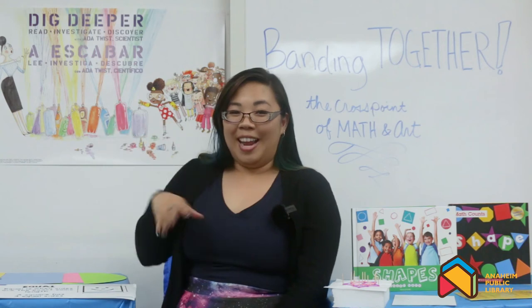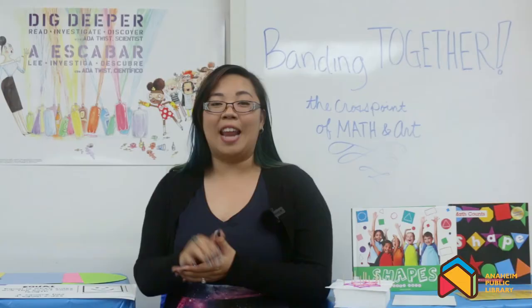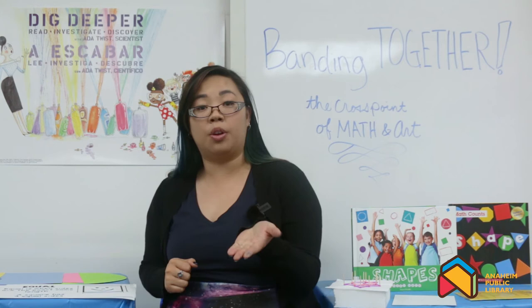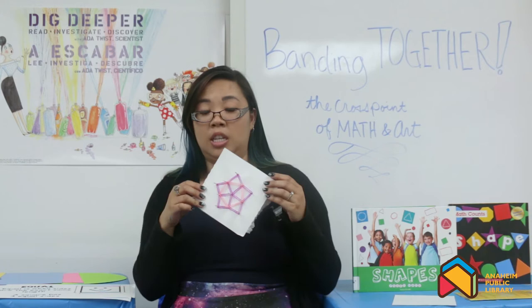Hi everybody! I'm Miss Kimmy! Welcome to the Anaheim Public Library's virtual STEAM program, Banding Together, where math and art come together. Today we're gonna learn a little bit about geometry, what that is, and how you can create a piece of art using geometry. We're gonna go through some really great things today, and I'm gonna show you how to make this really neat piece of art using a few simple things included in the art kits.